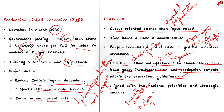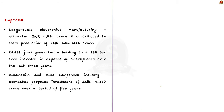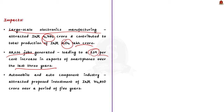Regarding the effectiveness of the program, as per the Economic Survey, the PLI scheme for large-scale electronics manufacturing attracted investment of ₹4,784 crore and contributed to total production of ₹2.04 lakh crore, including exports of ₹80,769 crore. As per the Ministry of Electronics and Information Technology, the PLI scheme for large-scale electronics emerged as the most successful, generating employment of 28,636 and leading to a 139% increase in smartphone exports over three years. Under the scheme, the automobile and auto component industry attracted proposed investment of ₹74,850 crore over five years.